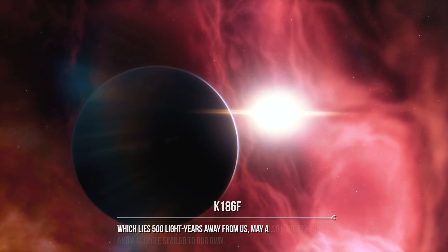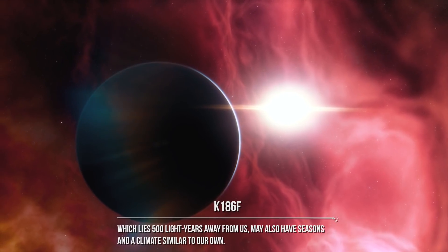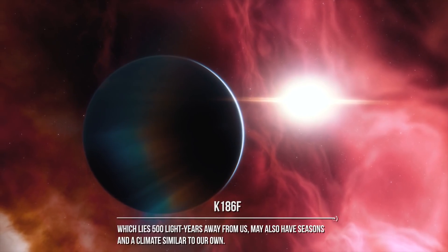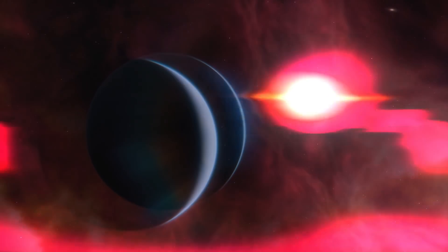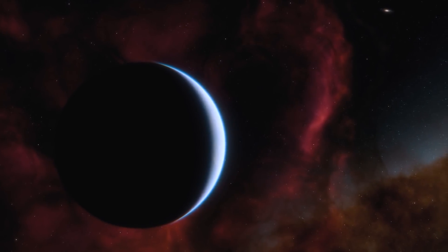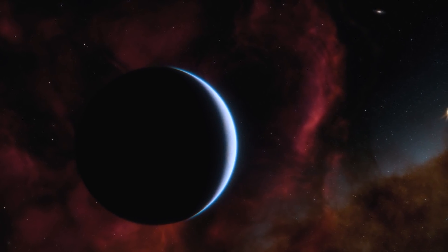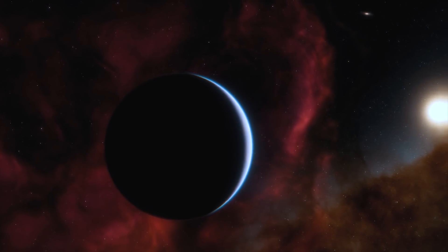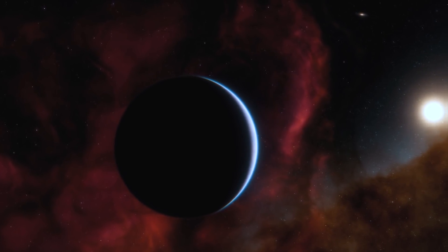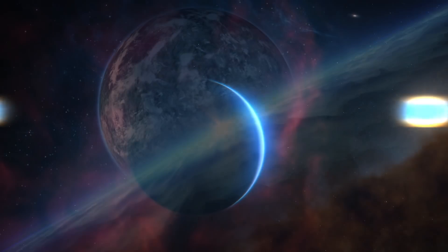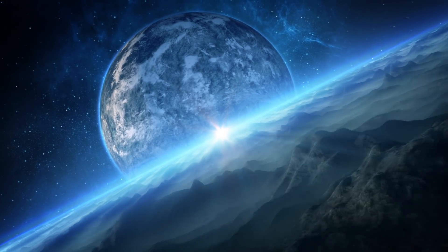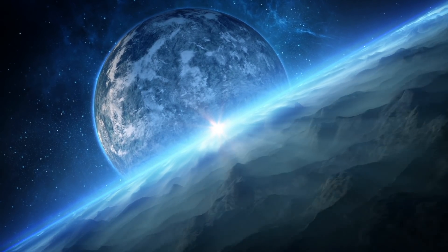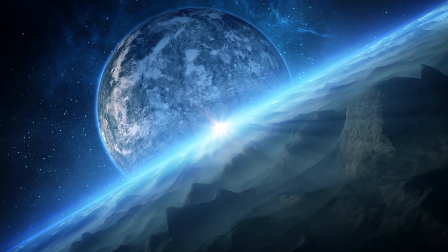Now, a new study indicates that another exoplanet, K186f, which lies 500 light-years away from us, may also have seasons and a climate similar to our own. New research out of Georgia Tech University has analyzed the planet's spin and axial tilt and found that its tilt is stable, just like the Earth's tilt. This makes it likely that K186f also has regular seasons and a stable climate. If you lived on that planet, you probably would not have any problem with the changing seasons. It'll pretty much be the same as here on Earth. Autumn, winter, spring, summer, and so on.